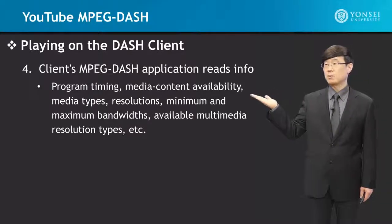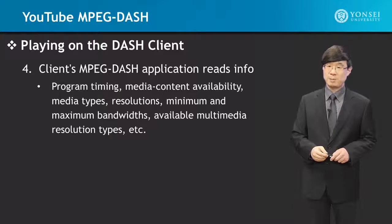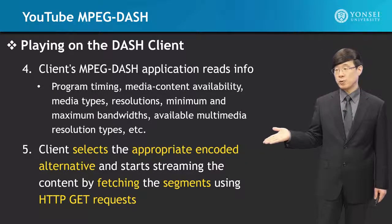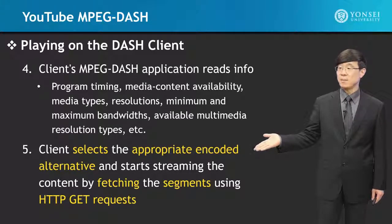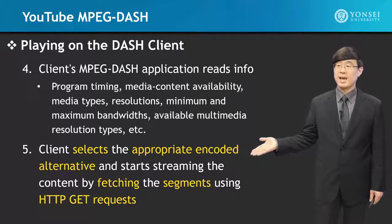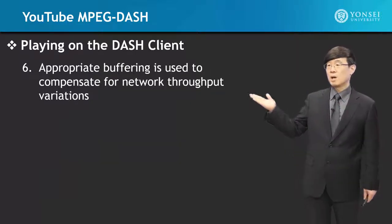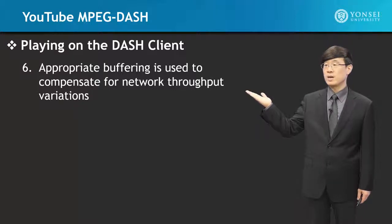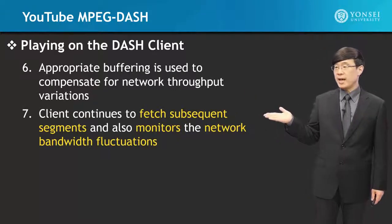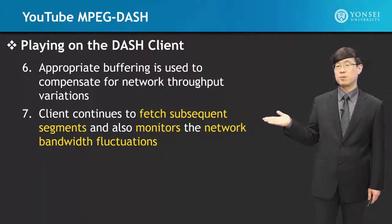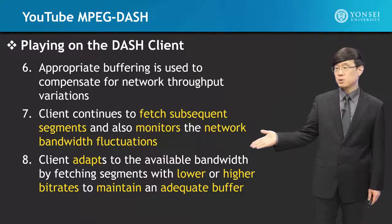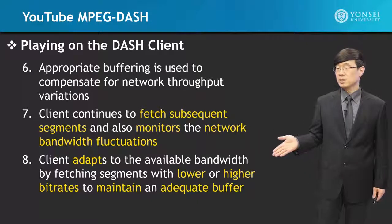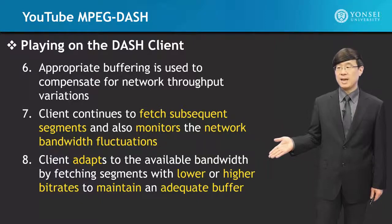The program timing, media content availability, media types, resolution, minimum and maximum bandwidth, and available multimedia resolution types — and much more — can be read from the MPD. The client selects the appropriate encoded alternative and starts streaming content by fetching segments using HTTP GET requests — exactly the pull mechanism in action. Appropriate buffering is used to compensate for network throughput variations. The client continues fetching subsequent segments and monitors network bandwidth fluctuations, adapting by fetching segments with lower or higher bit rates to maintain an adequate buffer.